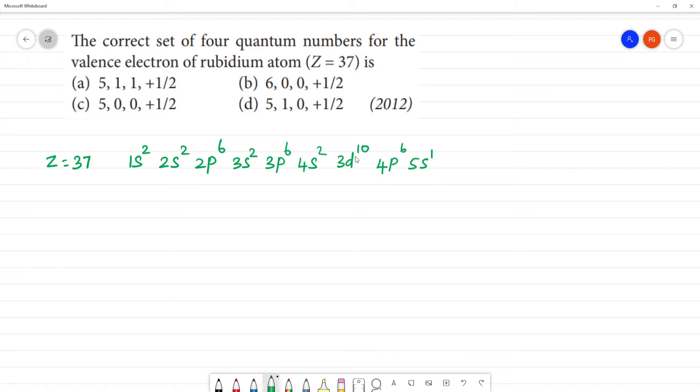37 is equal to 10, 20, 30, 36, and 37. The valence electron is the outermost electron, which is 5s1. The principal quantum number n is 5.